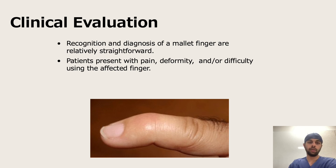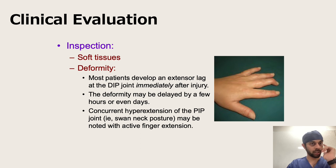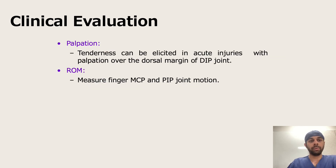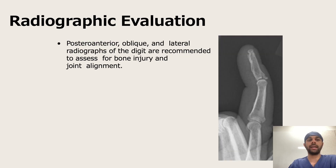Clinically, mallet finger is quite easily visible with pain, deformity, and difficulty using the affected finger — the patient cannot extend the finger completely. On inspection, look at the soft tissue and the deformity — it may develop immediately or take a few hours or days. There may also be a concurrent hyperextension of the PIP (swan neck posture) noted with active finger extension. Palpation will reveal tenderness at acute injuries, and range of motion assessment should measure MCP and PIP joint motion. An AP, oblique, and lateral x-ray is recommended to assess bone injury and joint alignment.